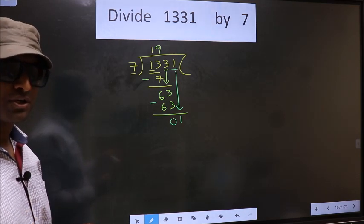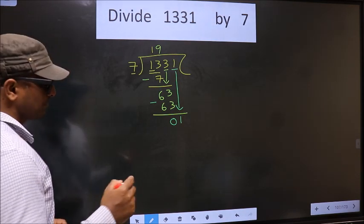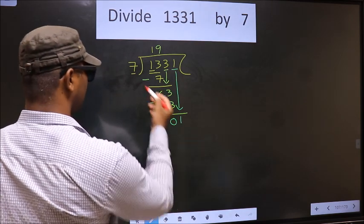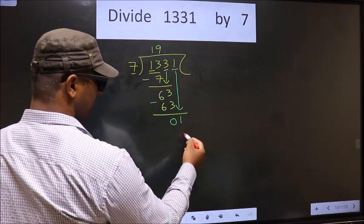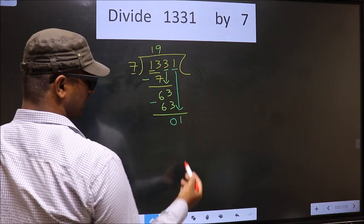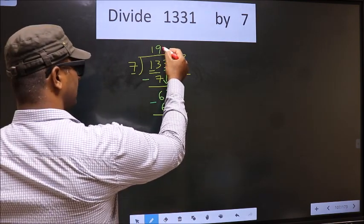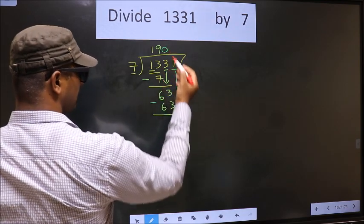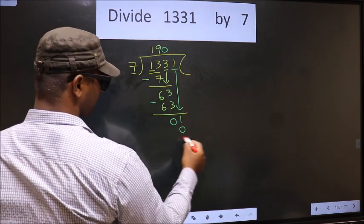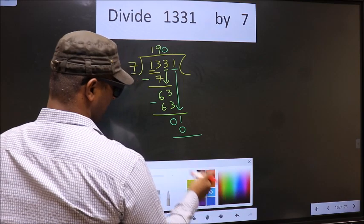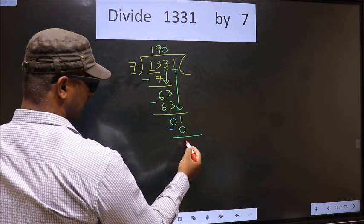Instead what you should think of is what number should we write here. If we write 7 here that is larger than 1. So what we do is we take 0 here. So 7 into 0. Now you subtract. 1 minus 0 is 1.